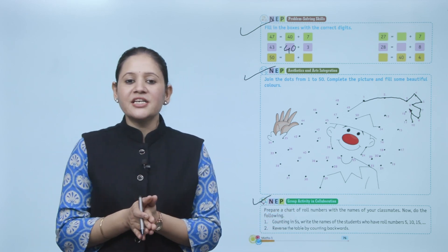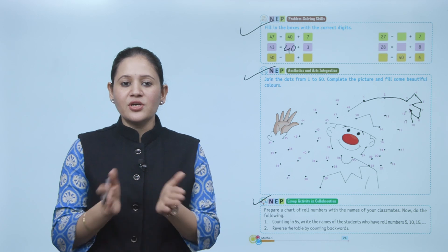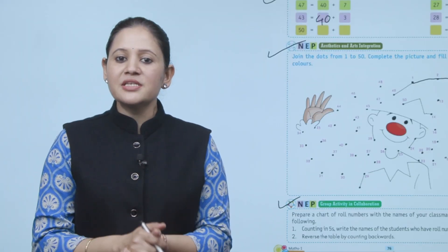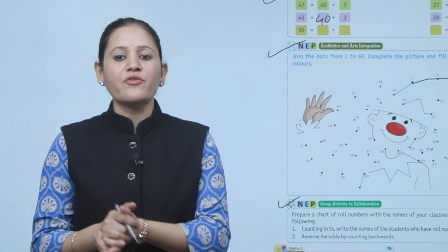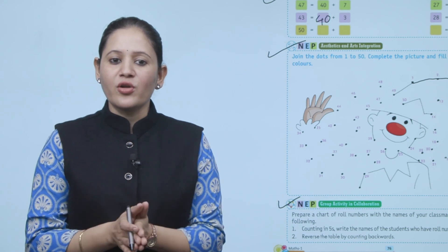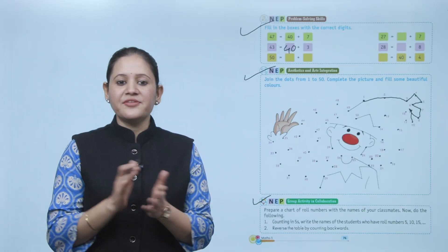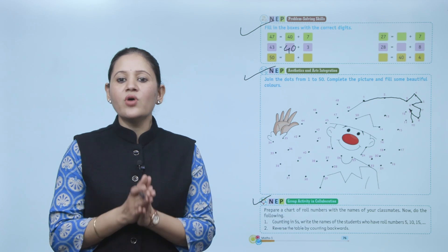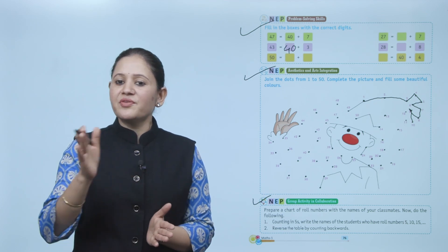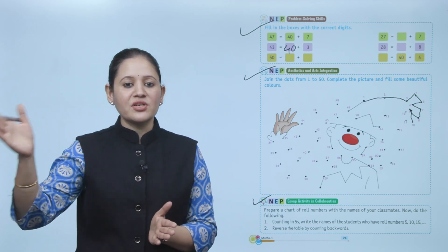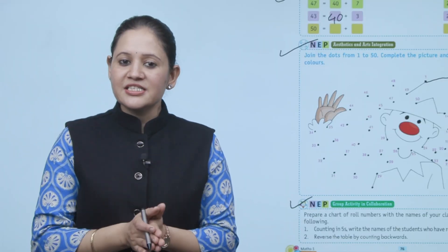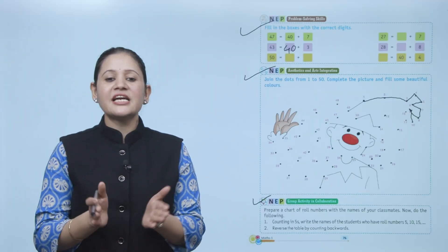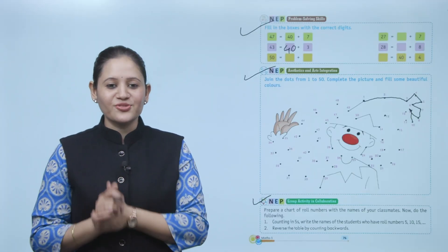Next is a group activity. You can do it at home or at school. Prepare a chart of roll numbers with the names of classmates, then do the following: counting in fives — write the name of the student with roll numbers like 5, 10, 15, 20, 25, and so on. Next, reverse the table by counting backward. Try this activity in your classroom.